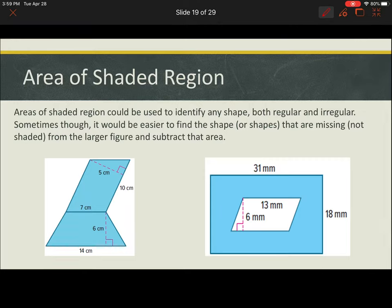A shaded region could be used to identify really any shape, both regular and irregular. As you see on the left, we have something similar to what you've already practiced. But on the right, you see that if we were to cut that into a bunch of smaller shapes, that would be pretty confusing. So instead, we're going to find the area of the larger shape and then subtract the area of the smaller shape.